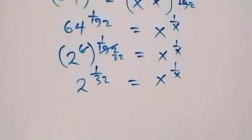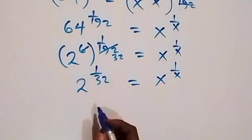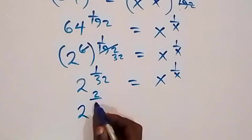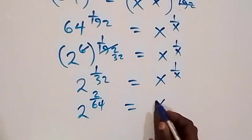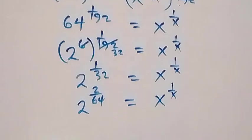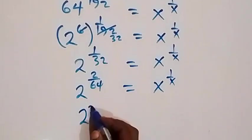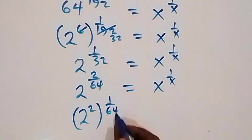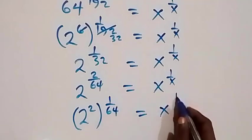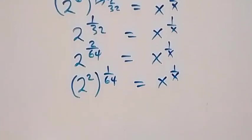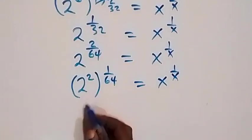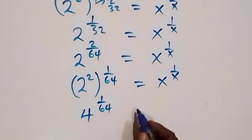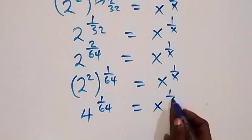Then we can also express 1 over 32 as 2 over 64. So we have 2 raised to power 2 over 64, which separates as 2 raised to power 2, then raised to power 1 over 64. And 2 raised to power 2 is 4, raised to power 1 over 64, equals to x raised to power 1 over x.